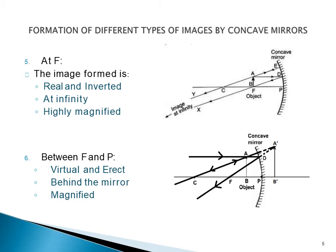This is the position when we keep the object between the focus and the pole of the mirror. In this case, the image is formed behind the mirror and it is a magnified image.